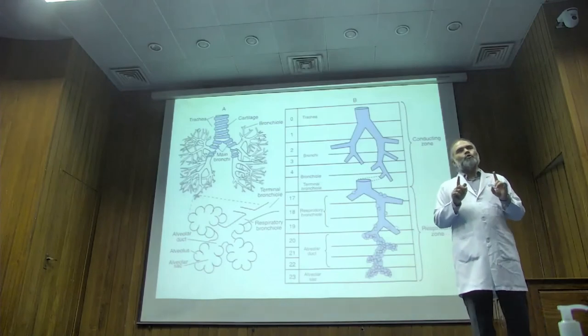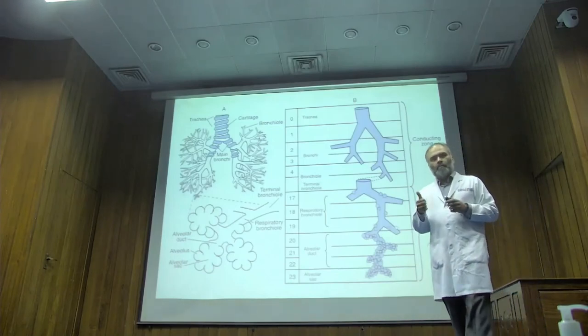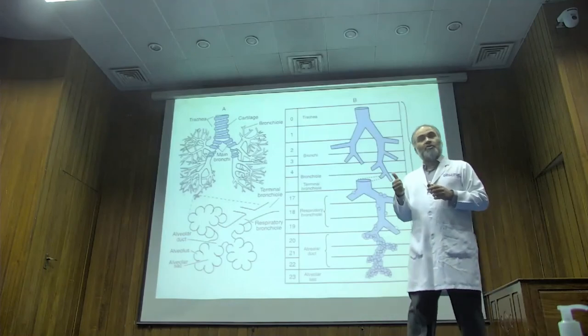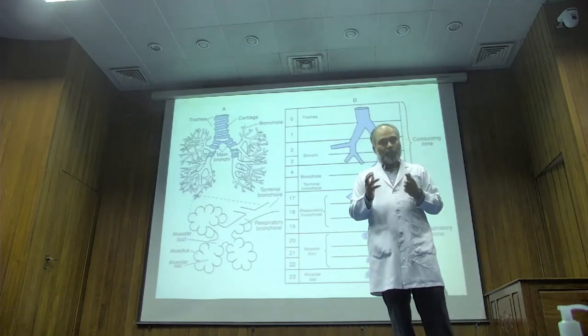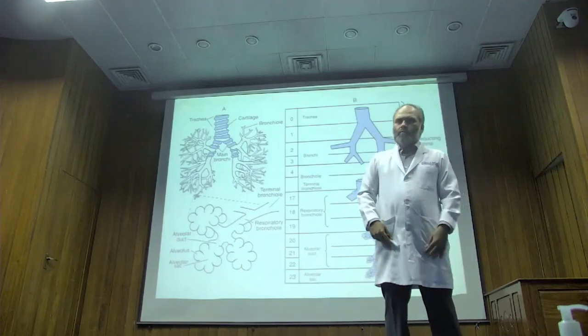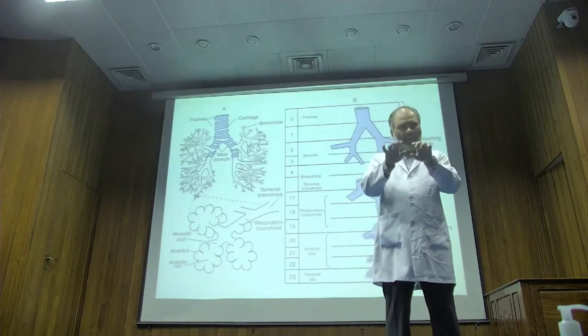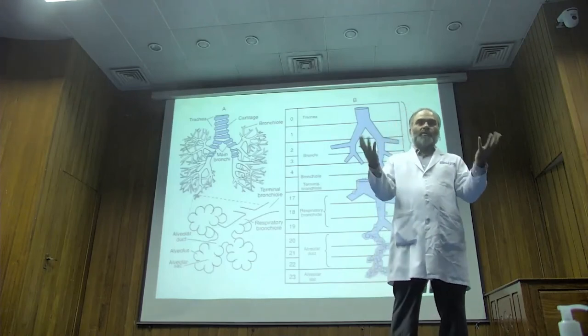You can do two nasty things to the lung. Either you can mess up that rough and jelly, the parenchyma, the tissue of the lung, which smoking does by the way. You know what smoking does? Smoking breaks down the elastin.